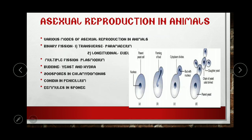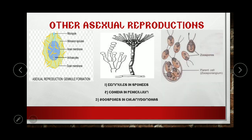Now, coming to asexual reproduction. The various modes of asexual reproduction are: binary fission, multiple fission in Plasmodium, budding in yeast, zoospores in Chlamydomonas, conidia in Penicillium, and gemmules in sponges. We will see all of these in detail.